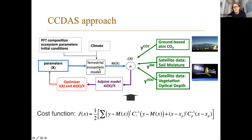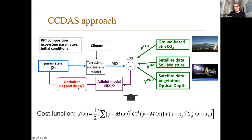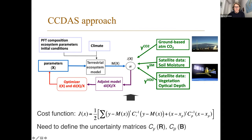We have the ecosystem model at the core. We have the plant functional types, the climate as driving data. Then we calculate the cost function and compare to the observations. In the case I will demonstrate today, we use three different types of observations: ground-based atmospheric CO2 observations, soil moisture and vegetation optical depth observations from SMOS - you can see a sketch of the SMOS satellite. With the adjoint model, we calculate the gradient, and using both the gradient information and the cost function information, we adjust the parameters to essentially minimize the cost function. One of the key ingredients in that iterative process are the error covariance matrices - the uncertainties.